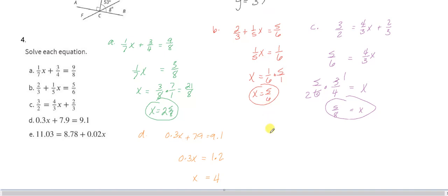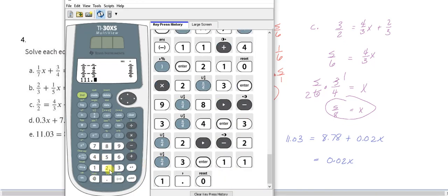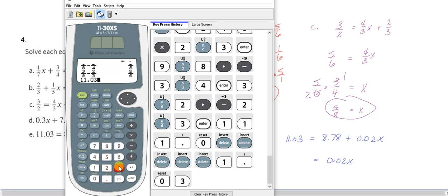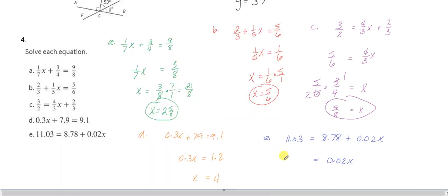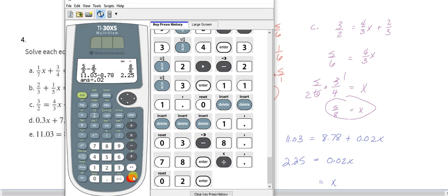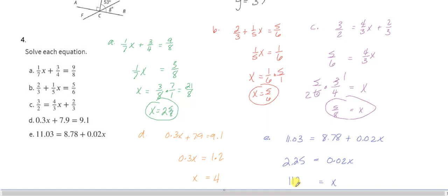And then the last one, E. 11.03 equals 8.78 plus 0.02x. So let's find out what 2 hundredths x is worth by finding the difference between these two numbers first. So 11.03, oh too many ones there at the beginning, 11.03. We subtract 8.78 and that gives us 2 and a quarter. So 2 and a quarter. And now we just got to divide that by 2 hundredths. So x will equal that division of 2 and a quarter by 2 hundredths, which we can show on the calculator, 0.02. And that turns out to be 112 and a half, 112.5. And there we go.